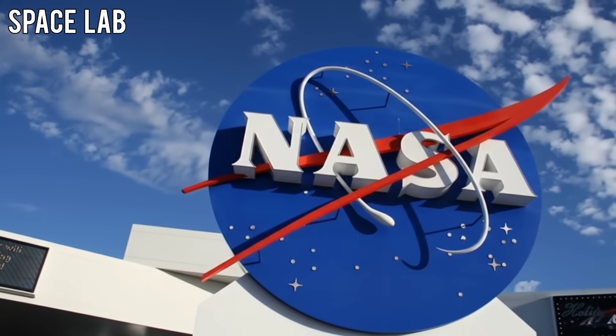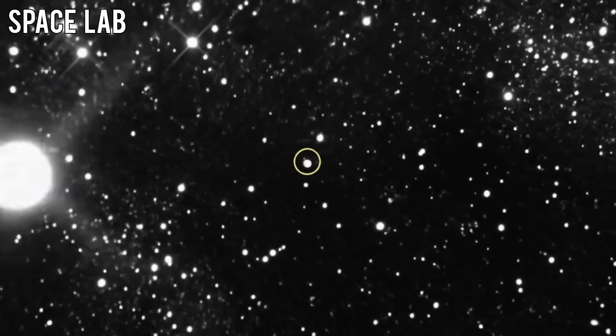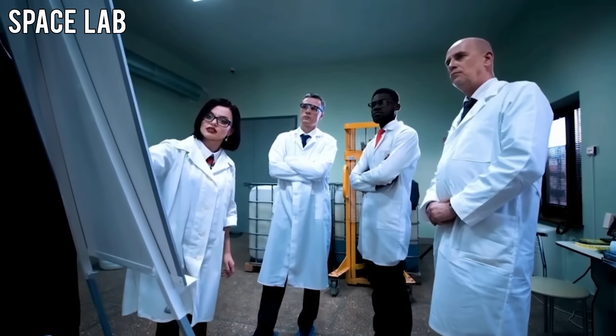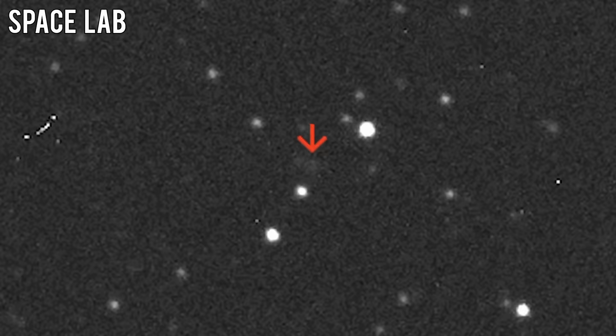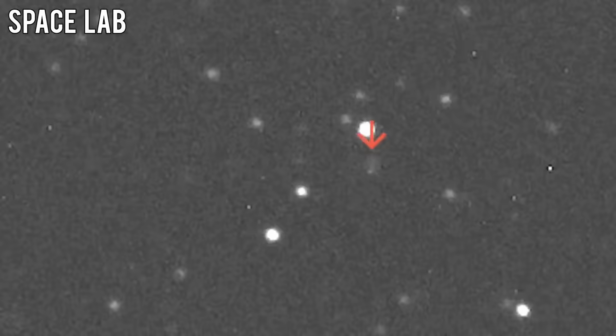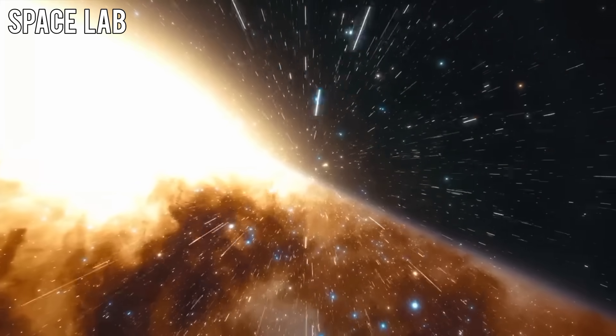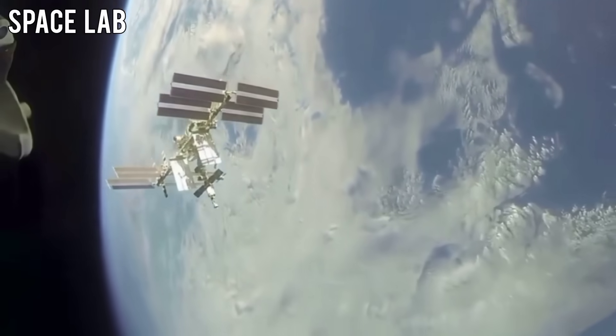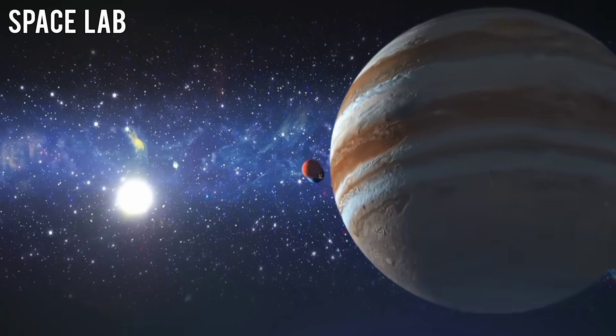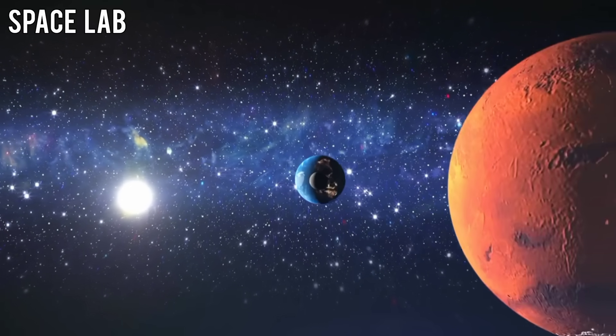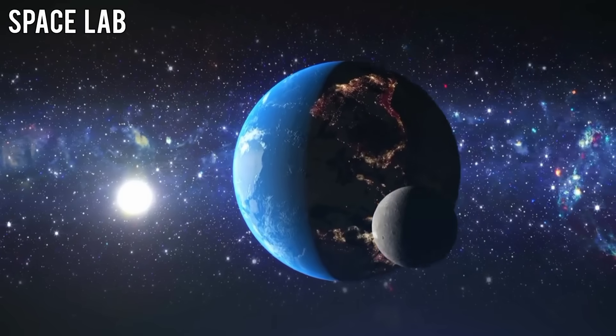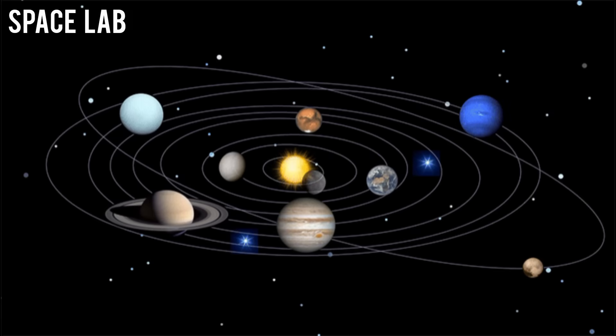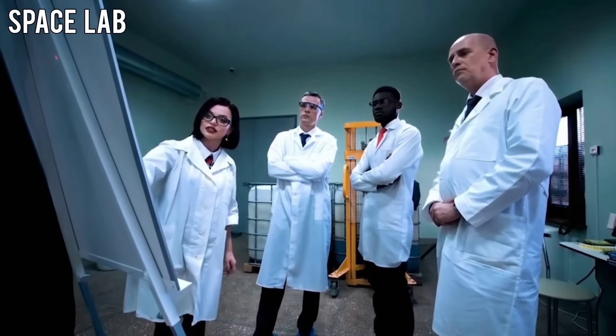Astronomers from NASA have just released the first-ever real image of 31 ATLS, an object that has left scientists both amazed and deeply concerned. For months, 31 ATLS was little more than a mysterious blip in the data, a faint, fast-moving anomaly detected by ground-based telescopes in Hawaii and Chile. It was cataloged as a near-Earth object, but its movement didn't quite match anything known. Some thought it was a comet, others argued it was an asteroid. But when its path began to curve unexpectedly toward the inner solar system, scientists realized something didn't add up.